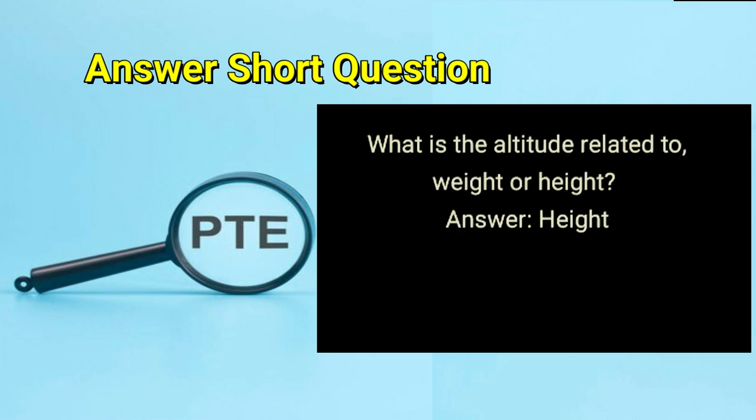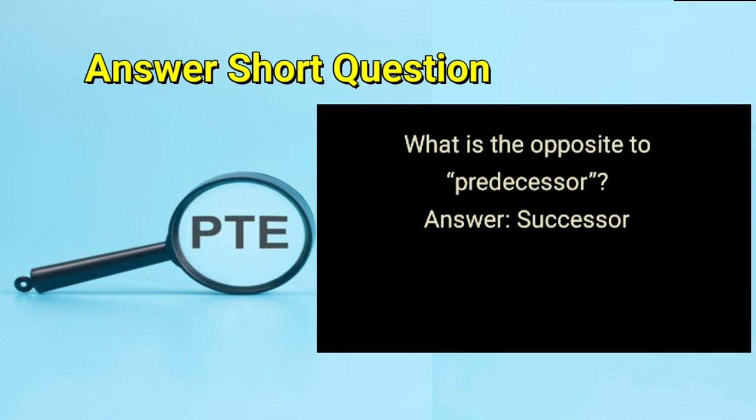What is the altitude related to — weight or height? Answer: height. What is the opposite of predecessor? Answer: successor.